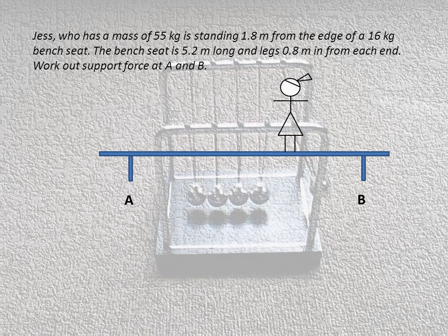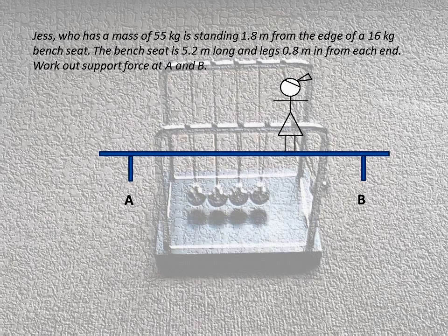The first type of torque question here is when we have two supports. Here's an example. Jess has a mass of 55 kilograms, standing 1.8 meters from the edge of a 16 kilogram bench seat. The bench seat is 5.2 meters long and the legs are 0.8 meters in from each end. Work out the support force at A and B.